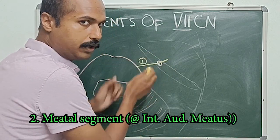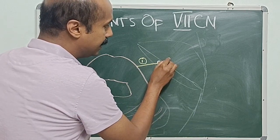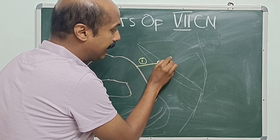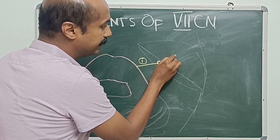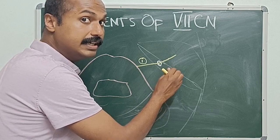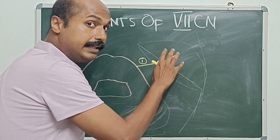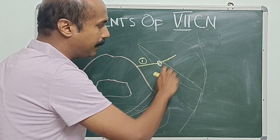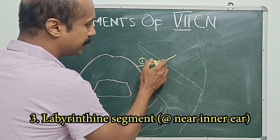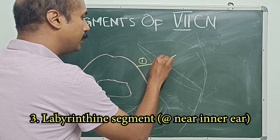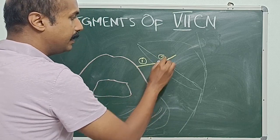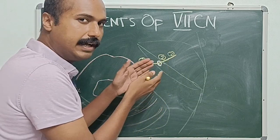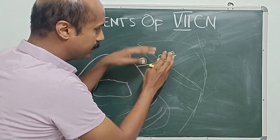From there, the seventh nerve goes through the intrameatal course — that is, within the internal acoustic meatus. This is called the intrameatal course. After that, it enters into the fallopian canal or the facial canal, and that part near the labyrinth is called the labyrinthine segment. So segments two and three are the meatal segment and the labyrinthine segment.